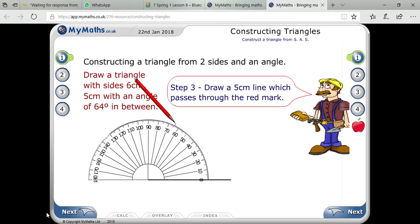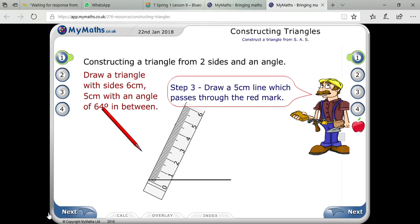If you are placing your protractor on the right hand side, then you have to count from the left hand side. So when you mark the 64 degree angle, then you have to draw a line with the help of a ruler.